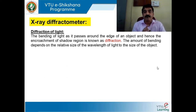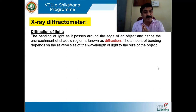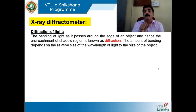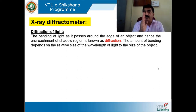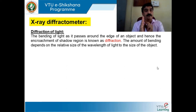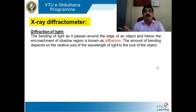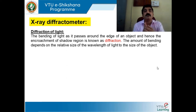The amount of bending — how much the light deviates — depends on the size of the object. This is a very basic thing you studied in your pre-university course. Light bends only when the object is very, very small in size — the size of the object must be comparable to the size of the wavelength. Visible light is very small — about 10 to the power of minus 9 to minus 10 meters — so the object thickness must also be as small as possible.